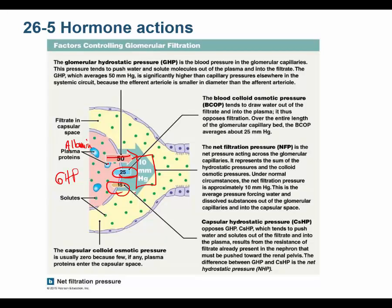That 10 mmHg net filtration pressure is not much, so blood pressure is very important. If blood pressure drops, you'll have far less filtration and waste products stay in your bloodstream. But you also don't want blood pressure too high, because it can damage the filtration membrane — rupturing the 90 nm fenestrae and 9 nm filtration slits — allowing protein and even cells into the urine, which is how you sometimes see blood in urine.